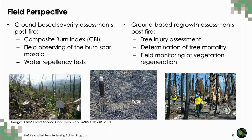The ratings are averaged for each category and then across all plots to provide a burn severity rating for the entire study area. CBI is particularly useful for comparison with satellite-derived burn severity. Water repellency tests are also a useful metric for examining soil burn severity, with more water-repellent soils representing higher soil burn severity. Ground-based assessments of vegetation regrowth often look at post-fire tree injuries and determine tree mortality over time.